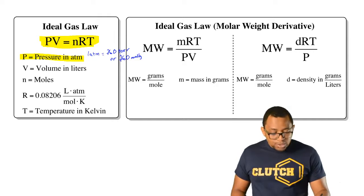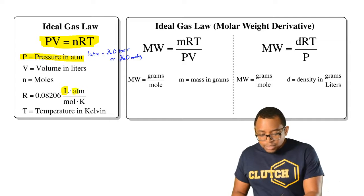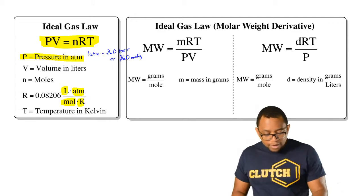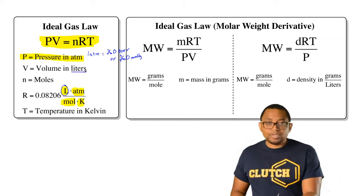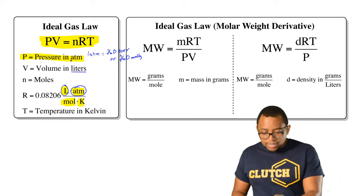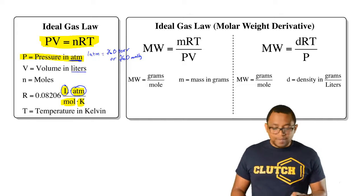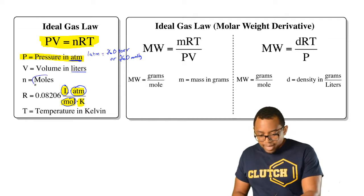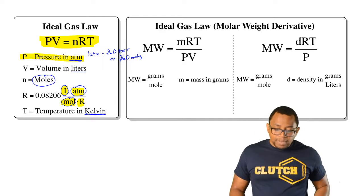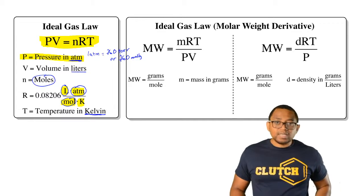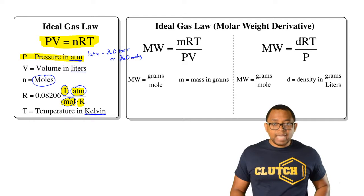R is our gas constant and its units basically influence the units of all the other variables. Because it has liters in it, that's why volume is in liters. Because it has atmospheres, that's why pressure ideally has to be in atmospheres. Moles are for n and temperature has to be in Kelvin. R itself is 0.08206 liters times atmospheres over moles times K.